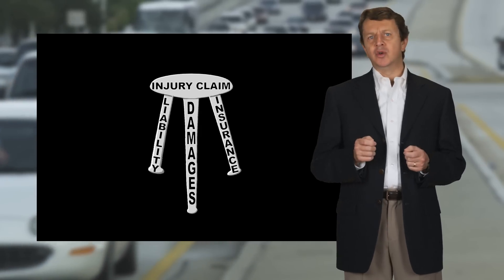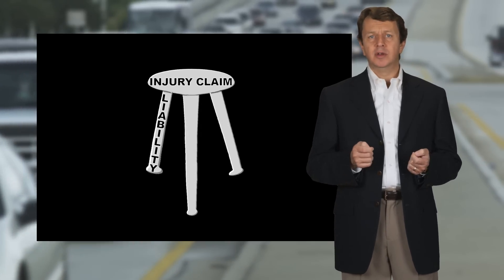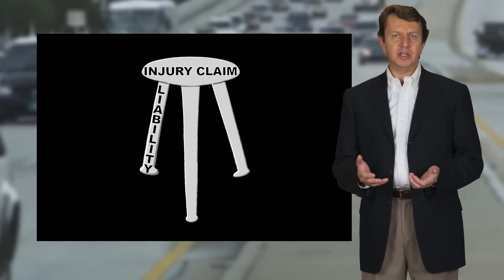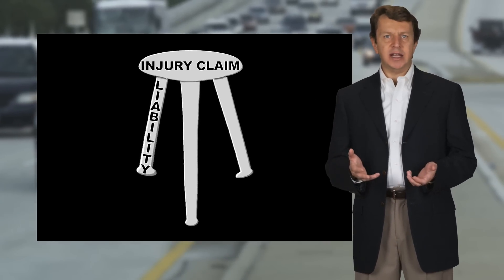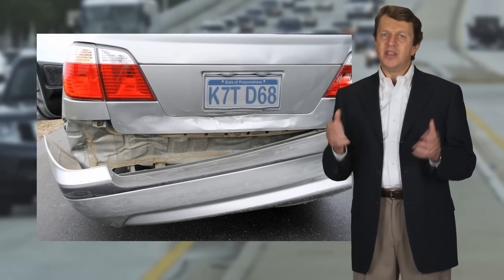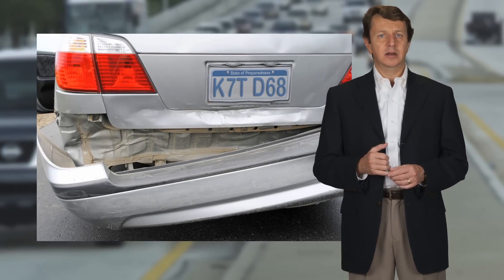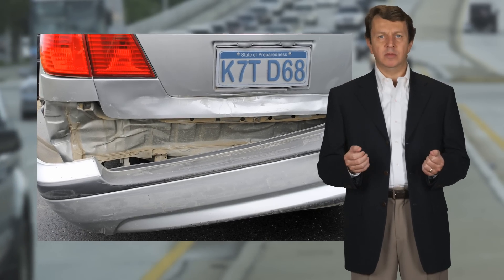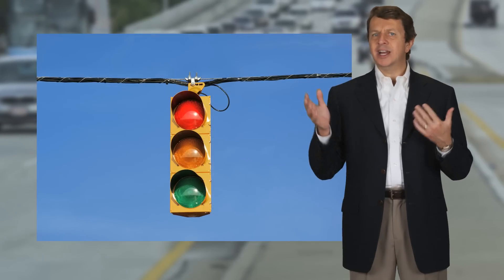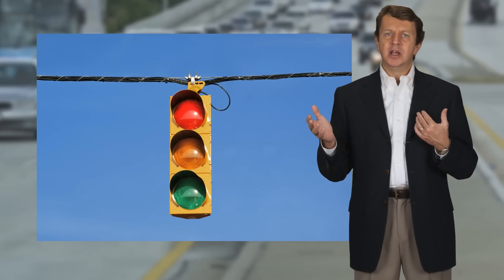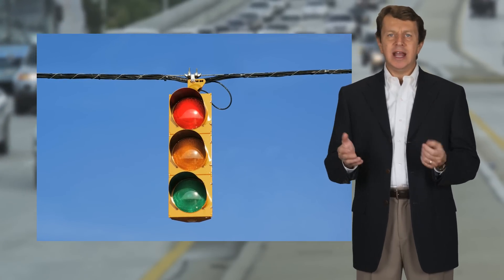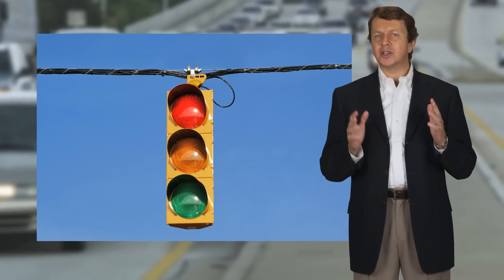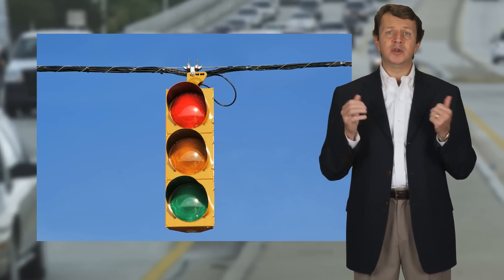The first leg of the stool is liability or fault — in other words, who is at fault for the accident? In a situation where you were stopped at a red light and suddenly hit from behind, fault is very clear. You did nothing wrong sitting where you're supposed to be, wearing your seat belt.